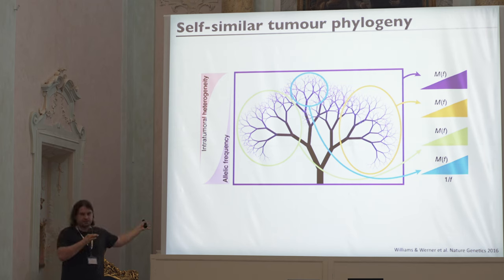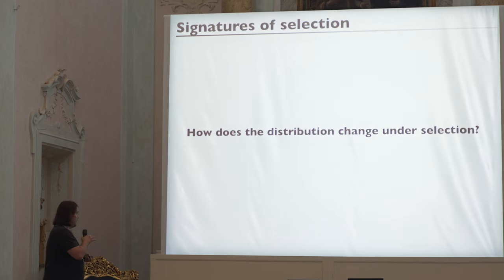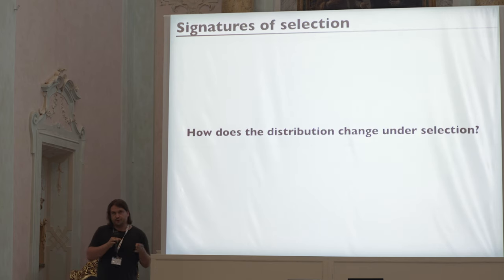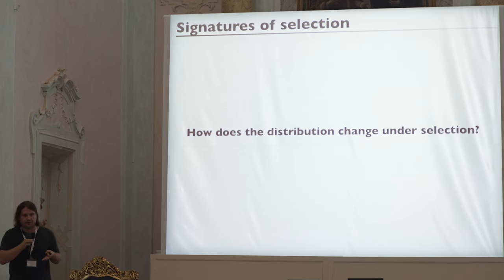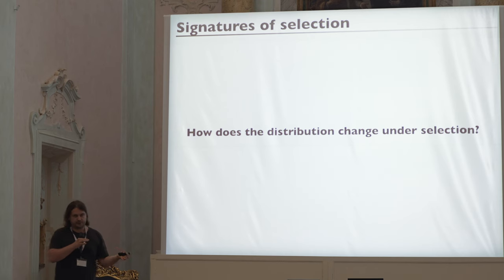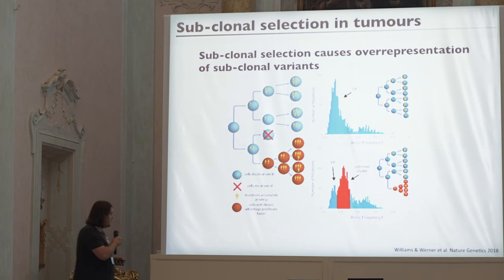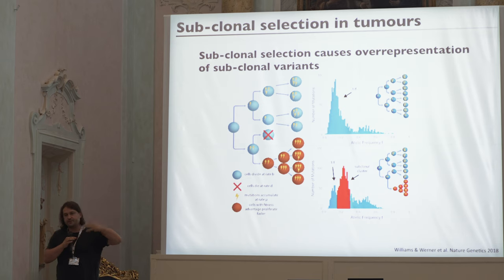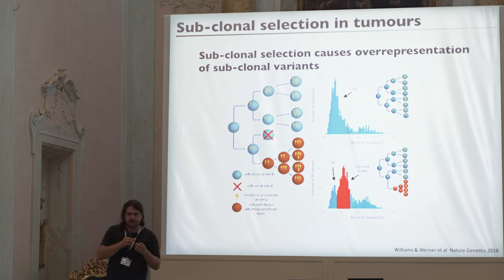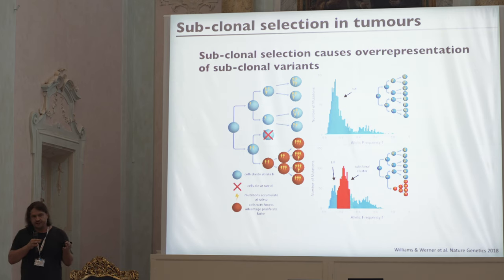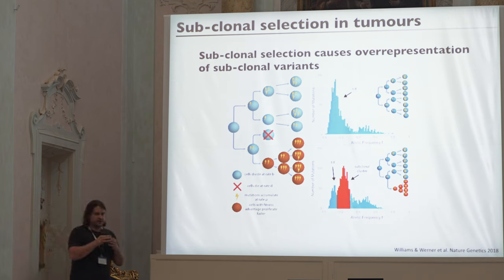Sometimes we find deviations — this is not well described by the scaling behavior — and then we need to ask why. The most obvious question is: how does it change if you have selection? Sub-clonal selection means at some point during growth you hit a mutation or something else that confers a fitness advantage to cells — they might grow faster, die less — and that subpopulation starts to increase in frequency.